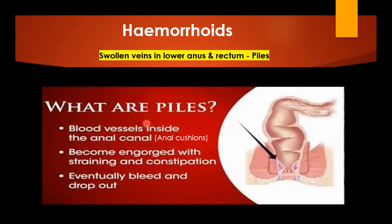What are hemorrhoids? Hemorrhoids are swollen veins in the lower anus and rectum. They are also commonly referred to as piles, which are actually blood vessels inside the anal canal that become engorged and dilated with straining and constipation. Eventually they tend to bleed and even drop off.